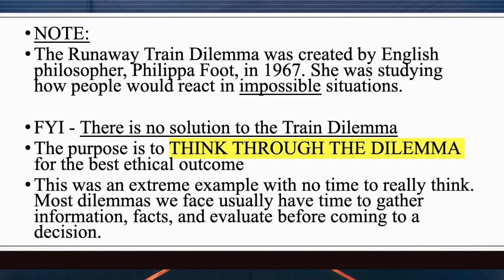This was an extreme example with no time to really think. Most dilemmas we face usually have time to gather information and facts and to really evaluate things before coming to a decision. Most dilemmas may not come to the point of death — although some do, such as abortion, euthanasia, and capital punishment. But in this extreme example of the runaway train, it is a dilemma where there is no solution.